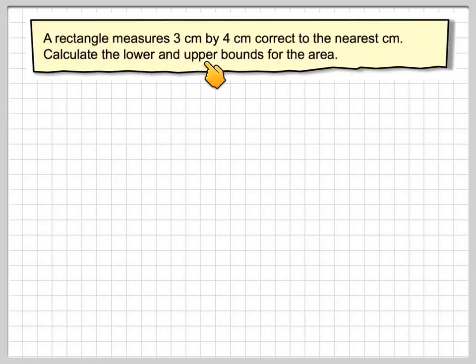A rectangle measures 3cm by 4cm, correct to the nearest centimetre. Calculate the lower and upper bounds for the area.